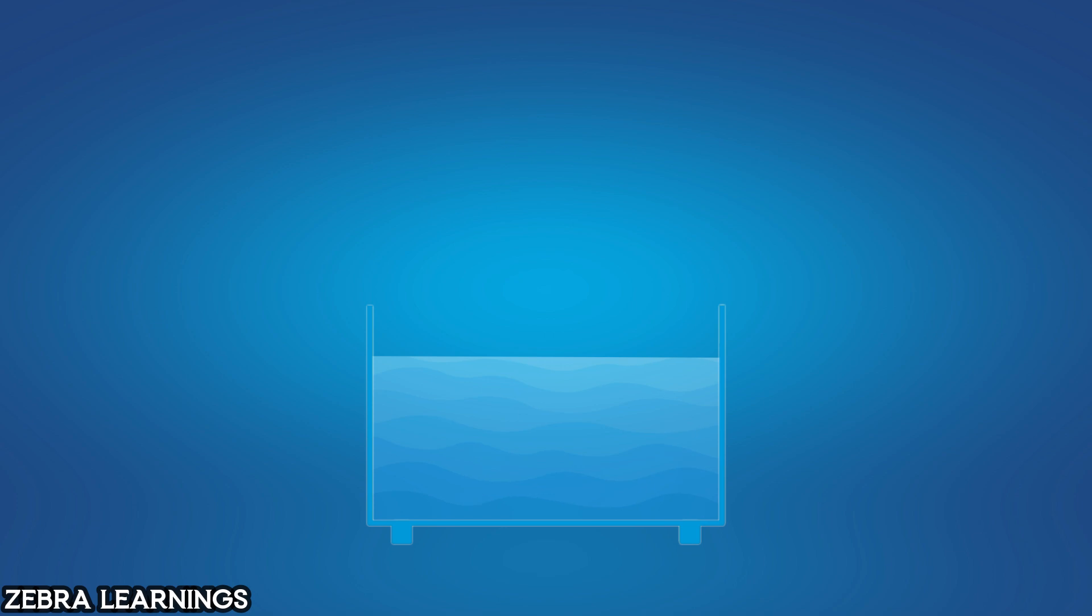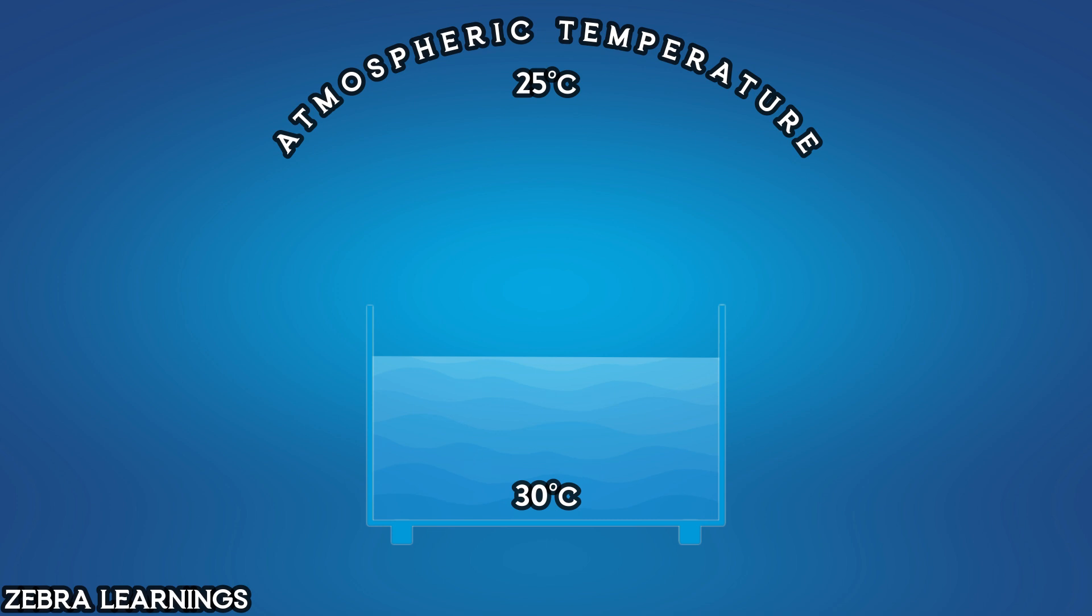First, let's understand how the temperature of water decreases through evaporation. Let's take a bowl of water. The water temperature is 30 degrees Celsius, and the atmospheric air temperature is 25 degrees Celsius. In the water at 30 degrees Celsius, the high-energy molecules absorb heat from the water and evaporate from the water's surface.